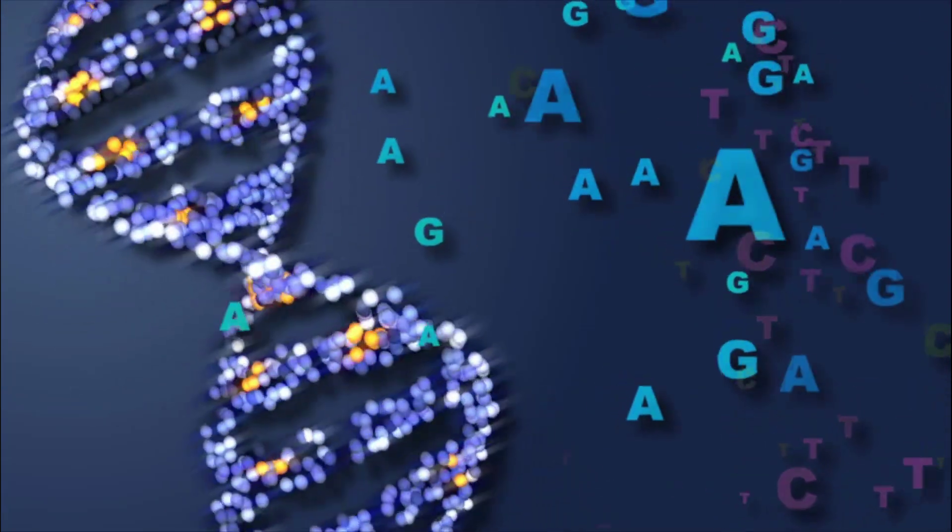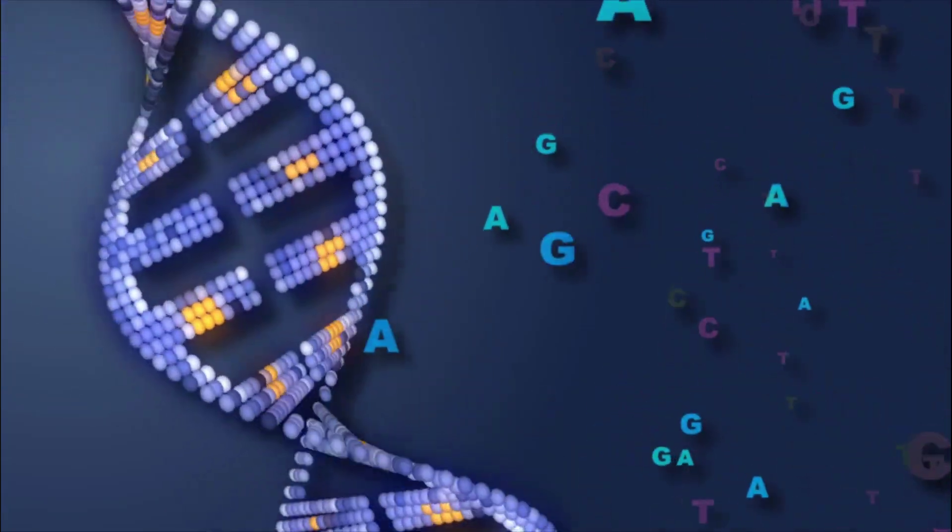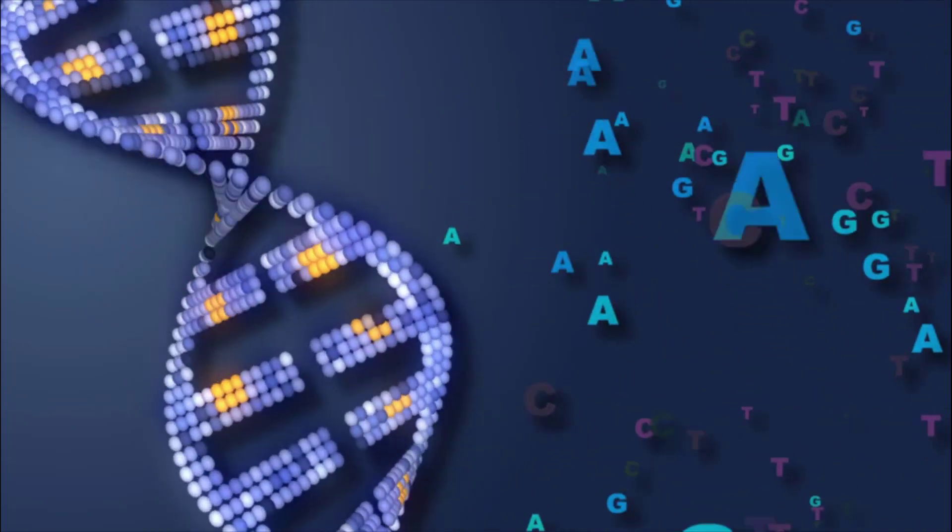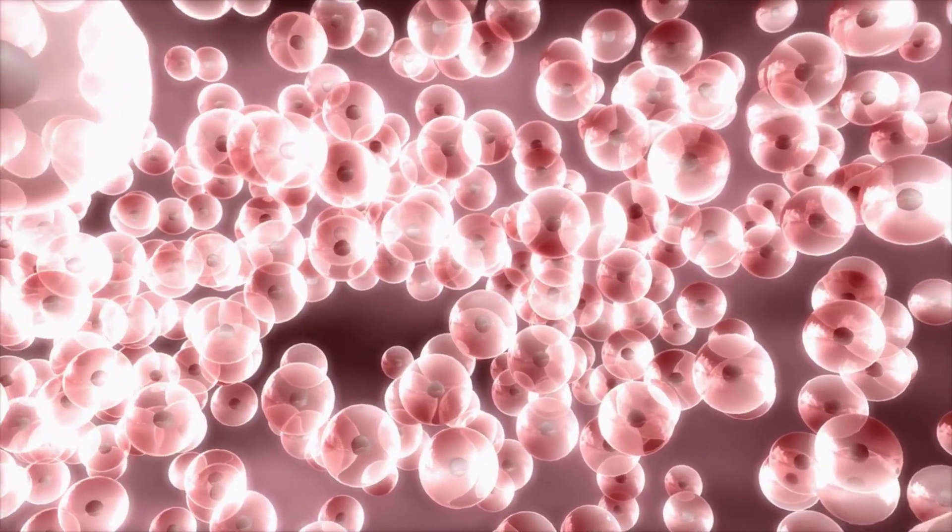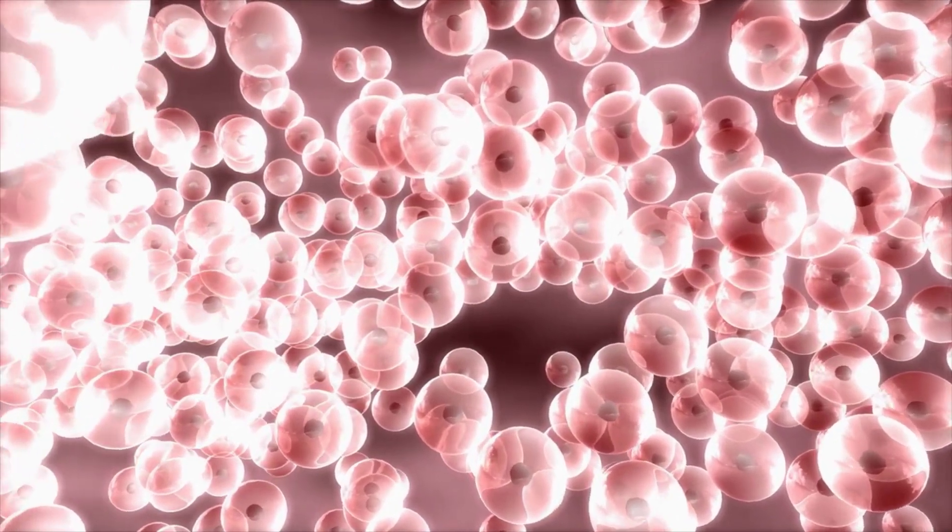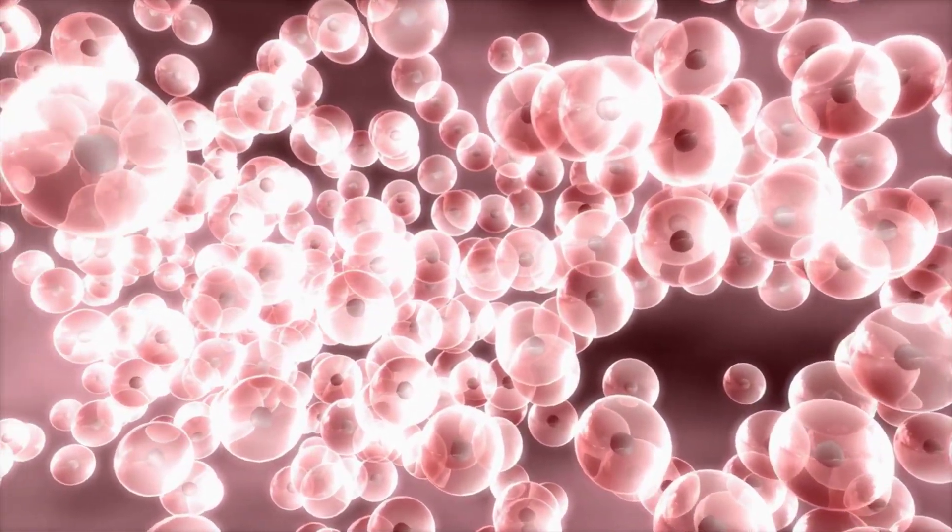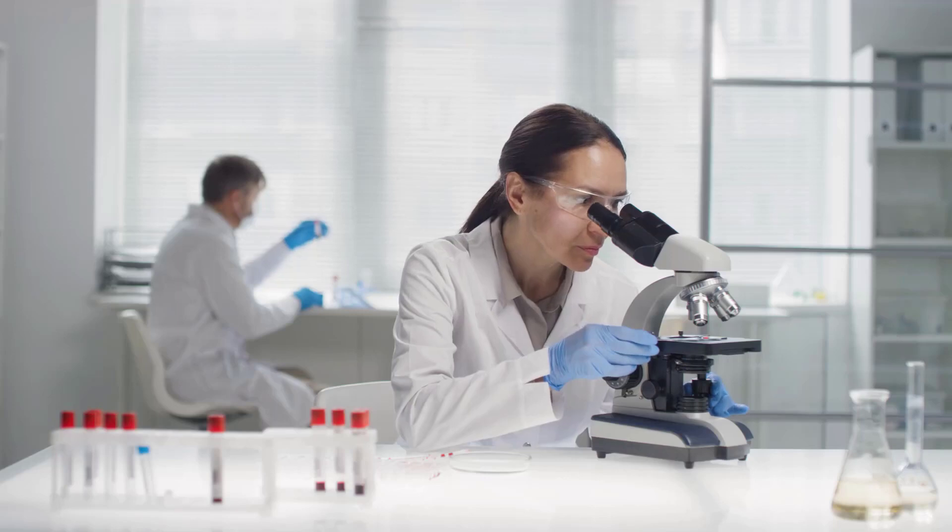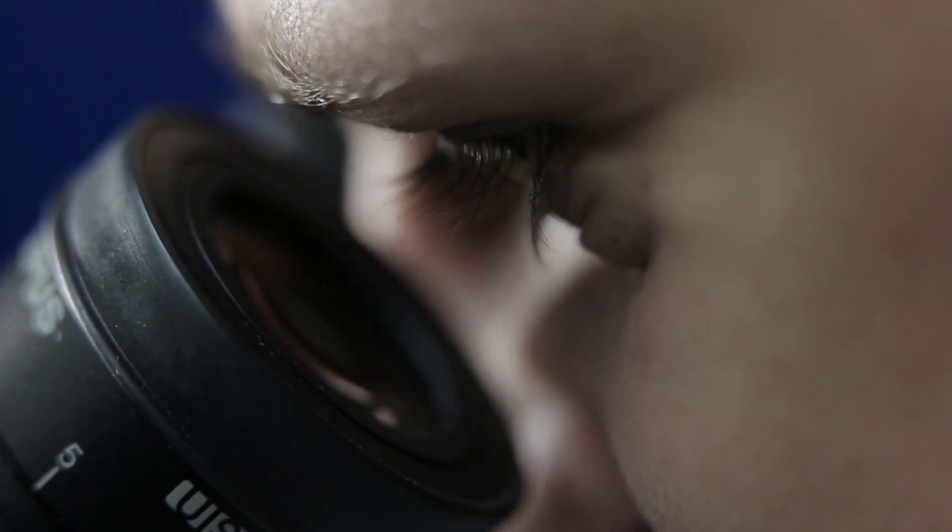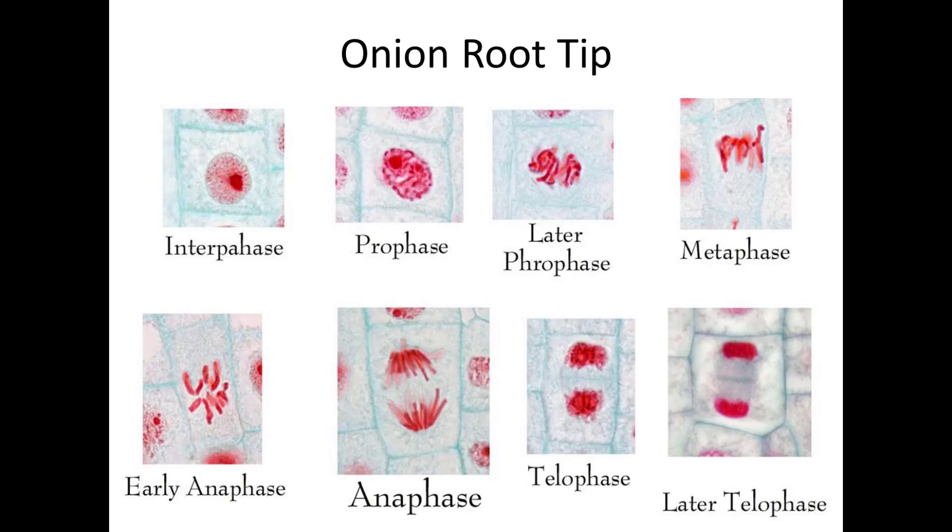During telophase, chromosomes begin to uncoil and form chromatin. This prepares the genetic material for directing the metabolic activities of new cells. When looking at the cells undergoing different phases of cellular division under a microscope, we can see the different stages. Here, we see different stages of mitosis in the onion root tip.